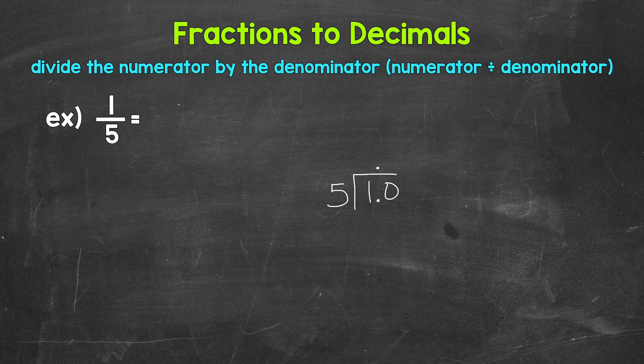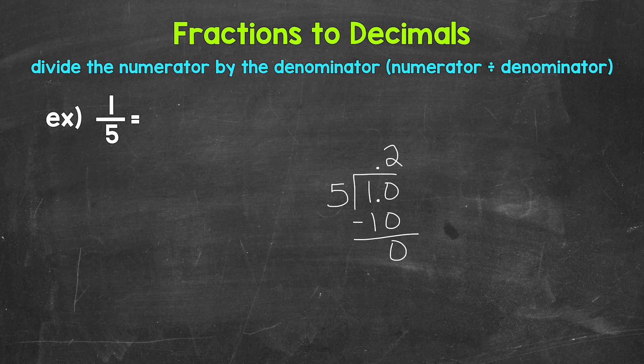10 divided by 5 is 2. So we put the 2 above the 0. Make sure that 2 is above the 0 since we used that 0 and thought of this as 10 divided by 5 — that's going to line us up correctly. Now we multiply: 2 times 5 is 10. Subtract: 10 minus 10 is 0. So we end up with a clean 0 at the bottom and nothing else to bring down, so we are done.